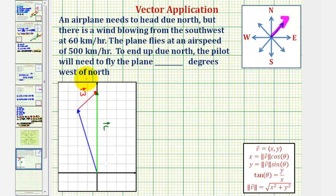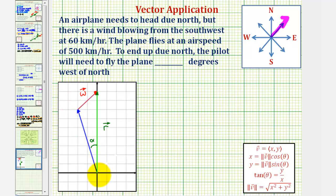Because of the wind, the plane actually has to fly a certain number of degrees west of north, which would be this angle here formed by this blue vector and the y-axis. So let's call this angle alpha, and therefore this blue vector would represent the plane — we'll call it vector p.